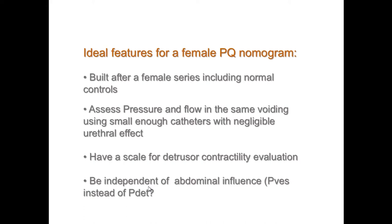A scale for detrusor contractility is needed — we should not be stuck only on obstruction. However, for women, maybe we should not have a categorical scale of normality like Schaefer's scale for men — very weak, weak minus, weak plus, normal minus, very strong — because voiding in women is so diverse. A numeric scale might be preferable to being constrained by such diagnostic terms.